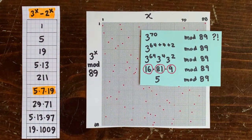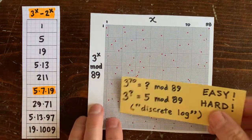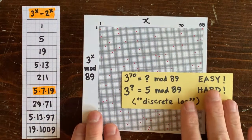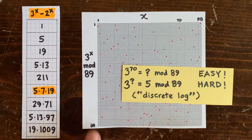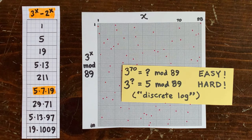It's super easy to compute something like 3 to the 70th mod 89 — it's just 5. But the inverse is super hard: figuring out that 3 to the what equals 5 mod 89. That's called the discrete log problem, and it's a cornerstone of internet encryption.